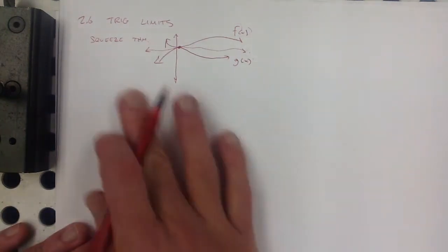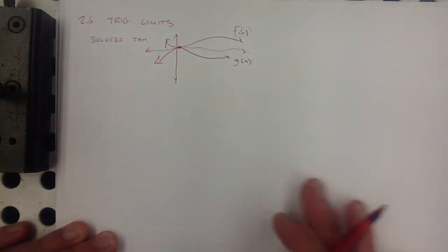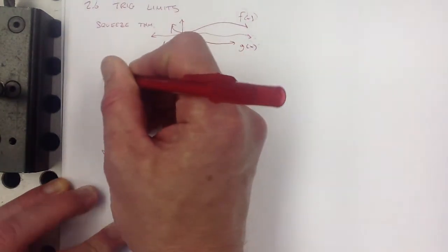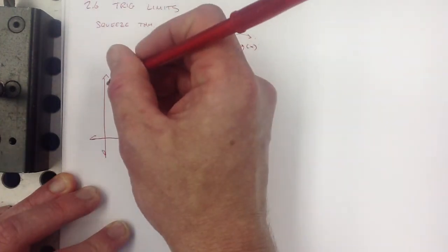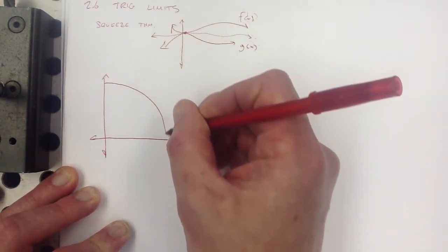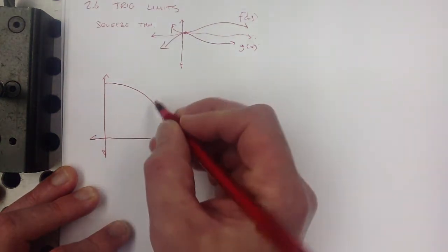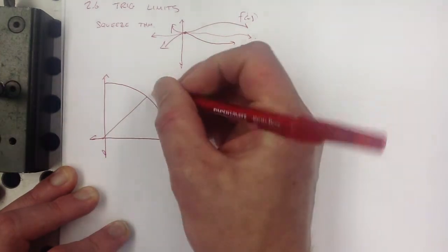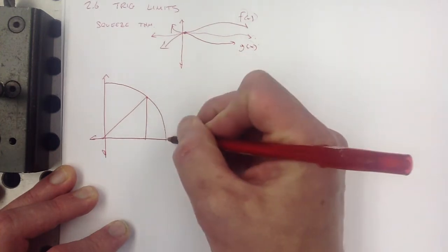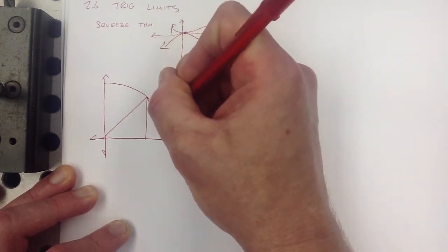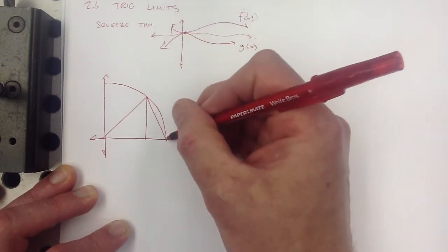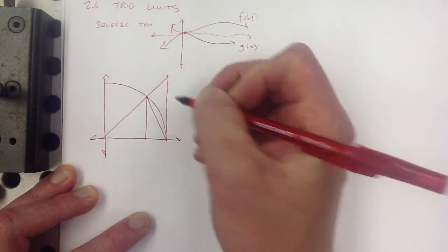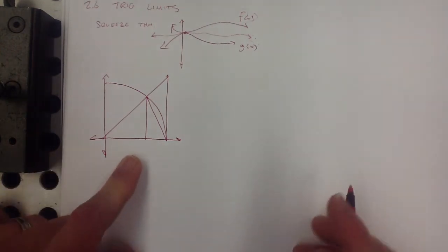The basic idea: if you can come up with an inequality that has one thing trapped between the other two, and you know the limit of both sides, then you can get the limit of the one in the middle. I'm going to come up with that inequality using some principles from geometry.